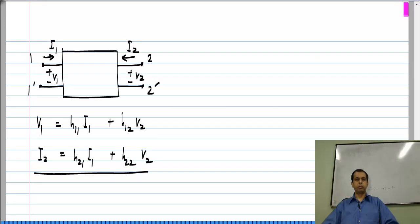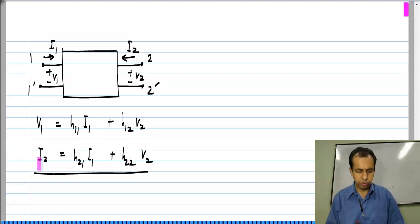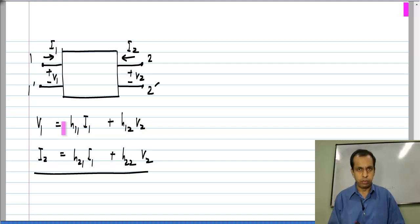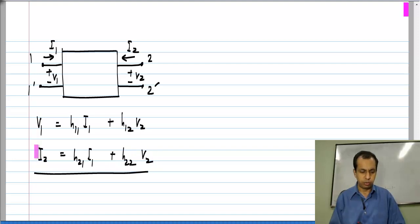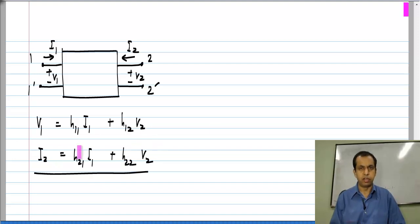Now we look at the H-parameter representation of the two-port. We have two equations: V1 is the sum of two quantities, so we can think of these as individual voltage drops in series to form V1. In the second equation I2, a current, is the sum of two quantities, so we can think of these as parallel branch currents which add up to give I2.